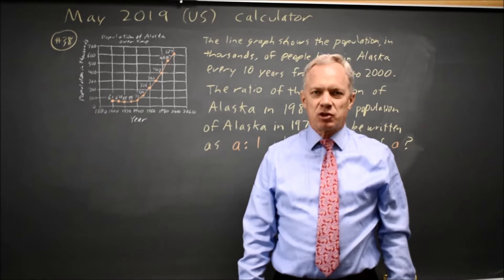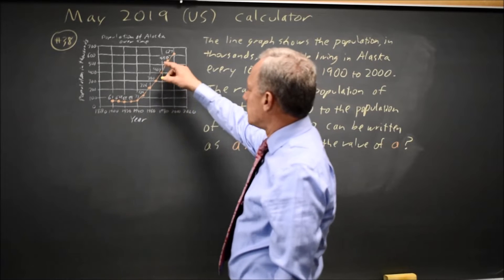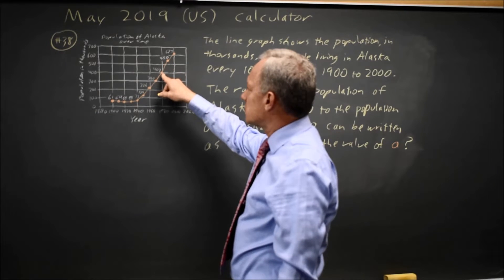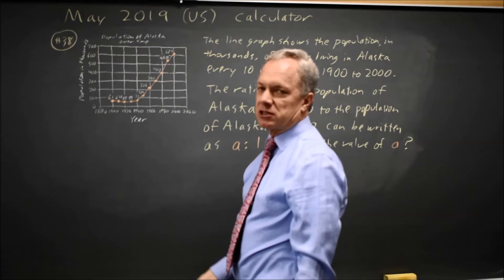This is calculator question number 38. The College Board is asking us for the ratio of the population in 1980 according to this graph to the population of Alaska in 1970 according to this graph.